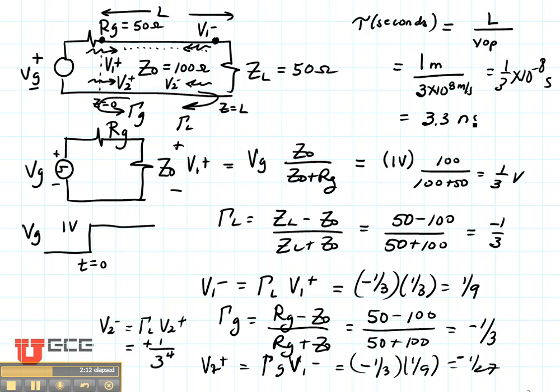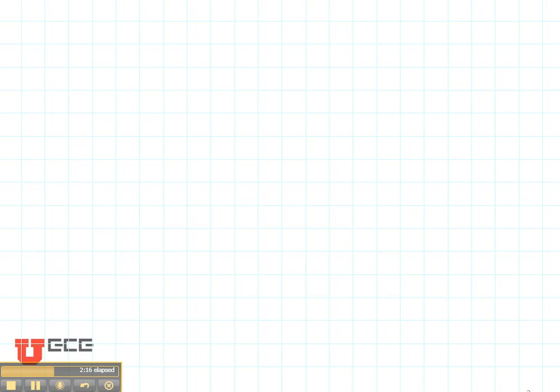So that's how long it takes to go from one end of the line to the other. Now there's a very efficient method for calculating what happens on this transmission line and it's called a bounce diagram. In a bounce diagram, we're going to plot time going down and we're going to plot distance or the length of the transmission line going across. So this right here is the front end of the transmission line Z equals 0 and this is the back end of the transmission line or the load end Z equals L.